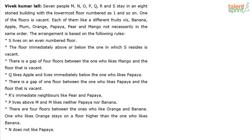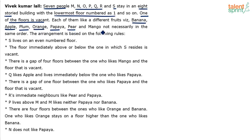There are 7 people — M, O, P, Q, R and S — who stay in an 8-storied building of which one of the floors is vacant. The lowermost floor is numbered 1, the floor above is number 2, and so on. There are 7 different fruits: banana, apple, plum, orange, papaya, pear, and mango — not necessarily in the same order. Let's represent these rules pictorially.